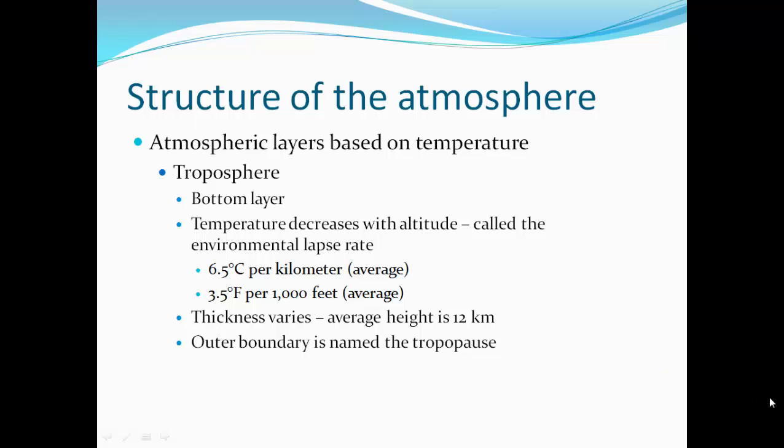Atmospheric layers are based on temperature. The troposphere is the bottom layer where temperature decreases with altitude — this is called the environmental lapse rate: 6.5 degrees Celsius per kilometer, or 3.5 degrees Fahrenheit per 1,000 feet. Its thickness varies, with an average height of 12 kilometers. The outer boundary is named the tropopause.